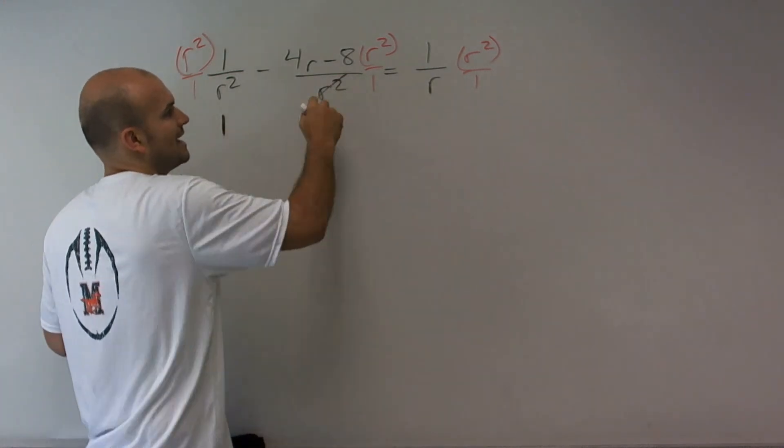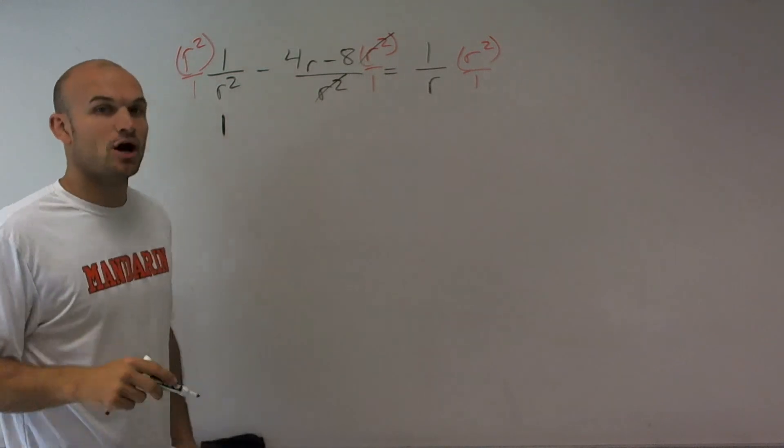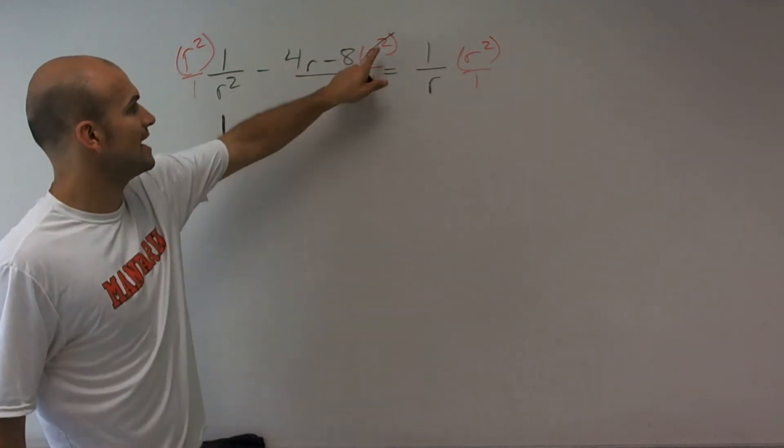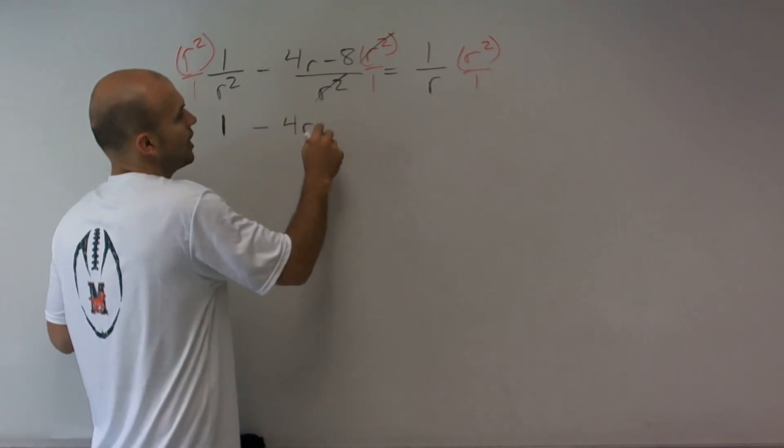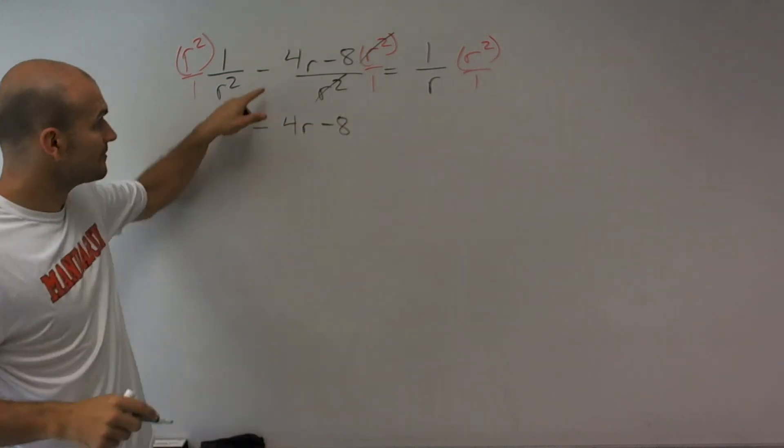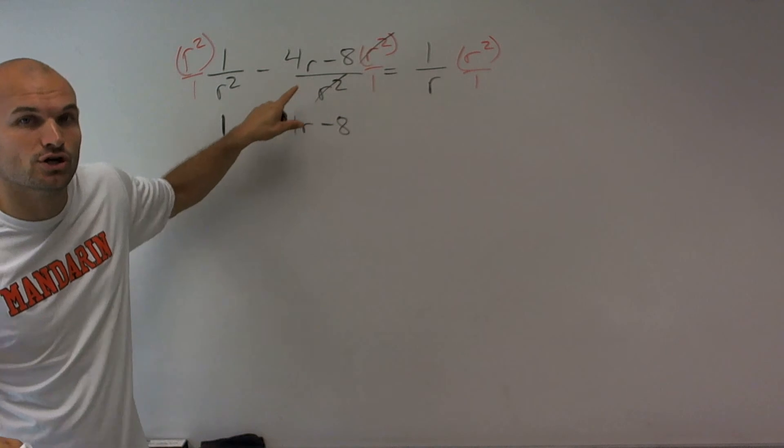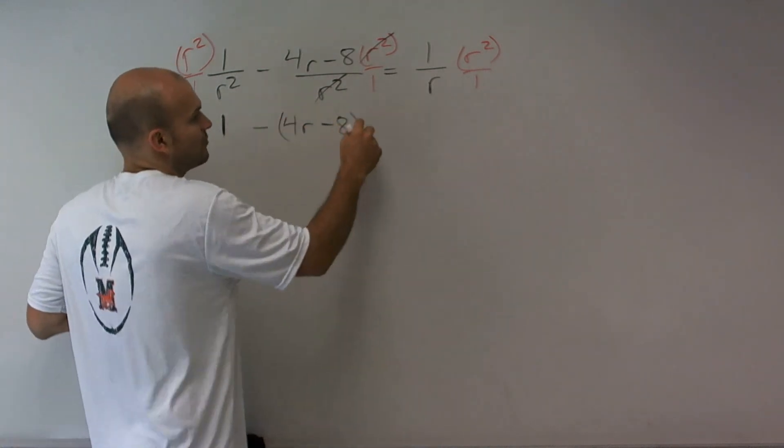This becomes 1. Again, r squared divided by r squared is going to go to 1, so then I have 1 times—now be careful—negative 4r minus 8. That's a negative of this whole term, so I need to make sure I put it in parentheses.